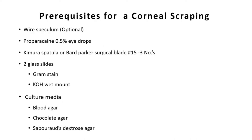Requirements for corneal scraping include: a wire speculum, which is optional and generally used in cases of corneal trauma just before suturing the corneal wound; proparacaine 0.5% eye drops, because it has the least inhibitory effect on microbes; a Kimura spatula or Bard-Parker surgical blade number 15; and two glass slides — one for Gram stain and one for KOH wet mount (potassium hydroxide wet mount).